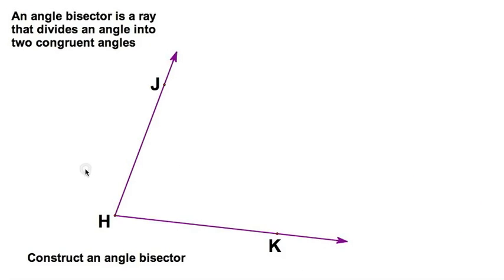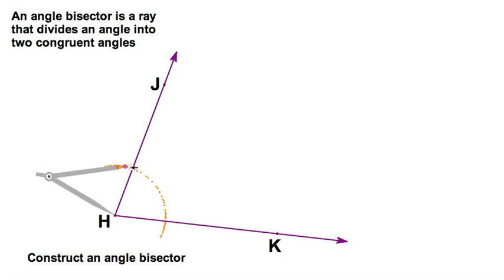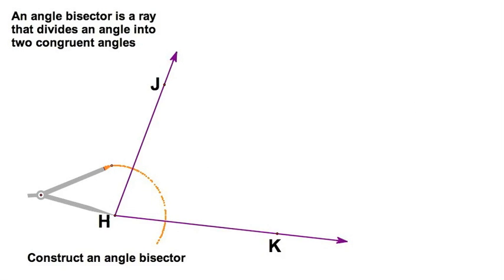Since this section is about angle bisectors, we're going to construct one. You can review your definition up there. I'm going to start here with a random compass swing right there. It gives us two intersections, one here and one here, that are equidistant from H.